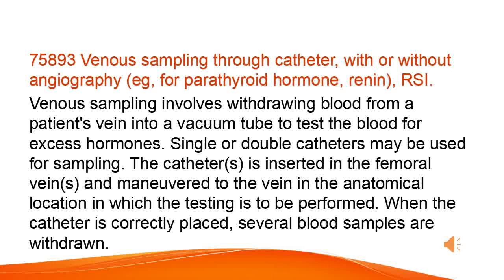Venous sampling through catheter, with or without angiography, for example for parathyroid hormone or renin. Venous sampling involves withdrawing blood from a patient's vein into a vacuum tube to test the blood for excess hormones. Single or double catheters may be used for sampling. The catheter is inserted in the femoral vein and maneuvered to the vein in the anatomical location in which the testing is to be performed. When the catheter is correctly placed, several blood samples are withdrawn.